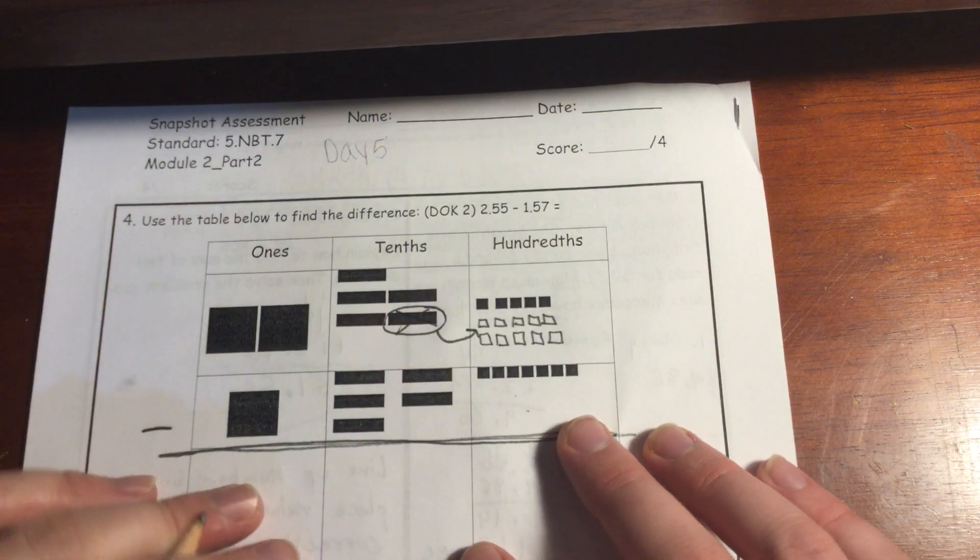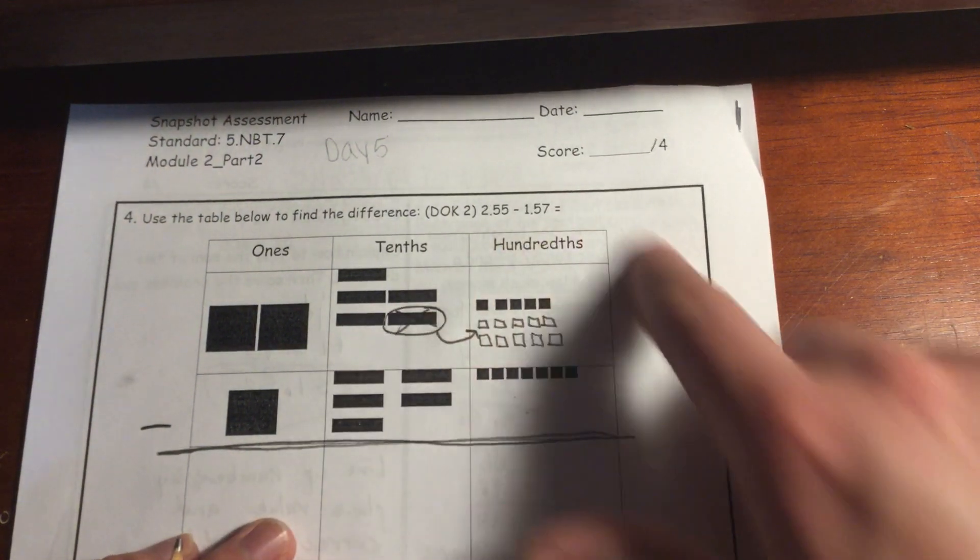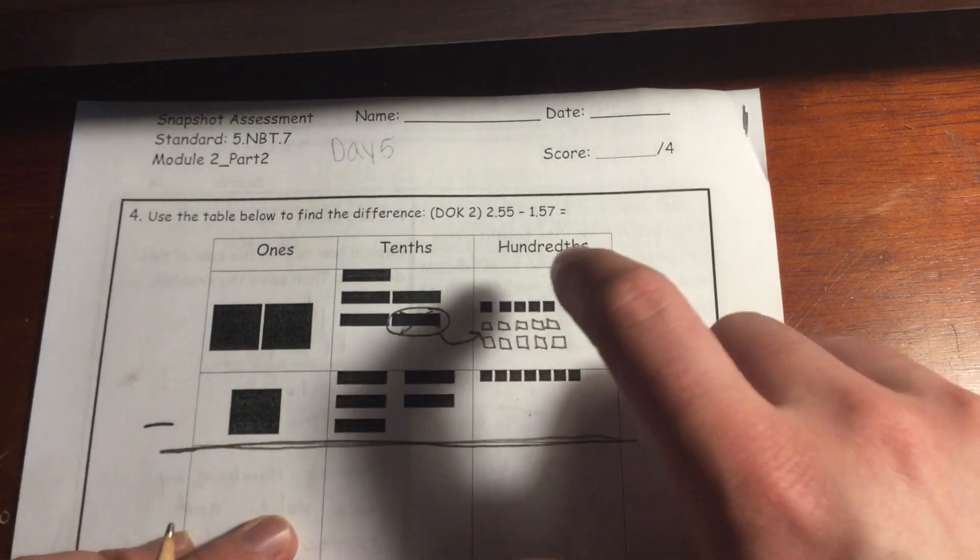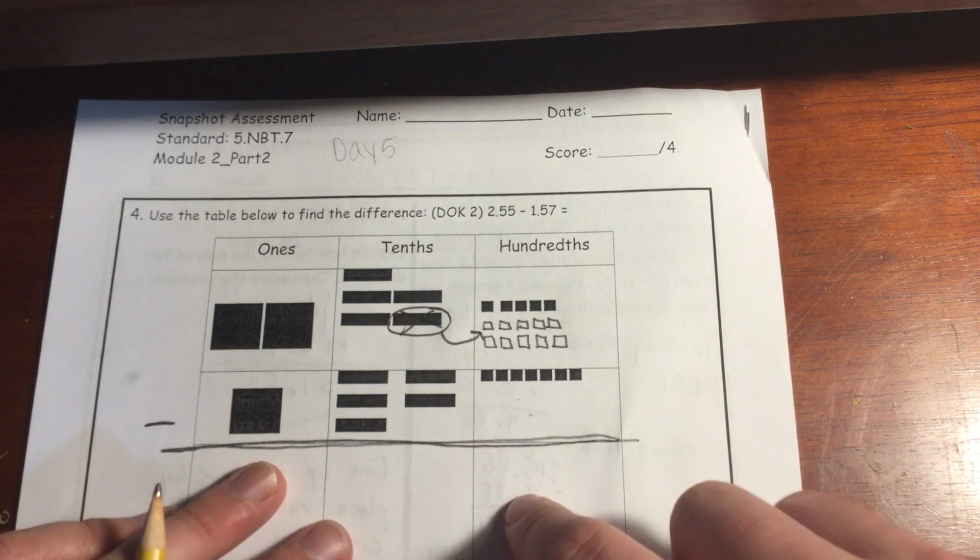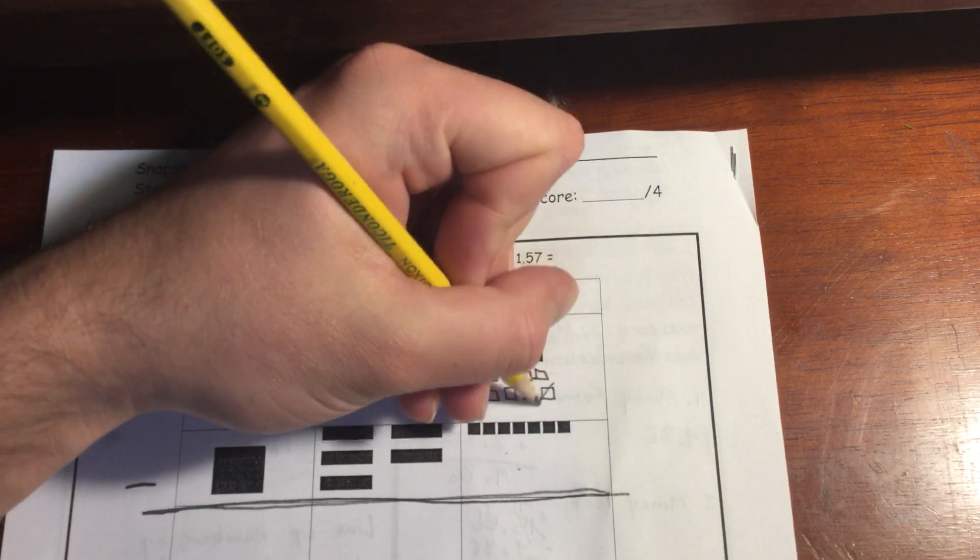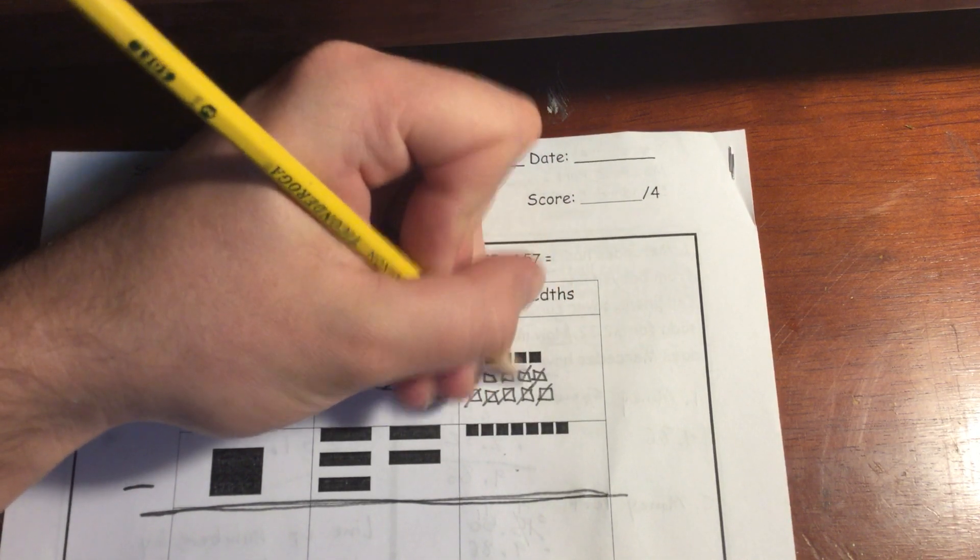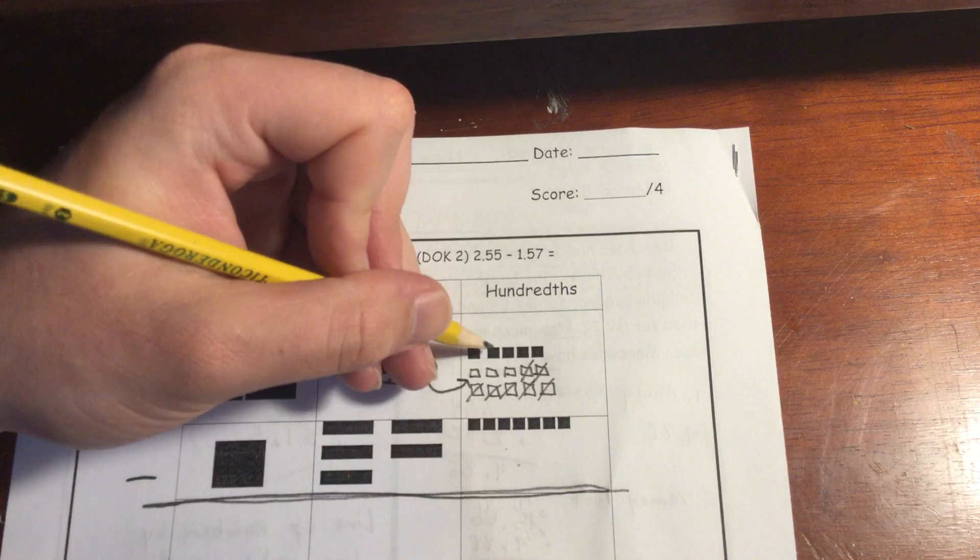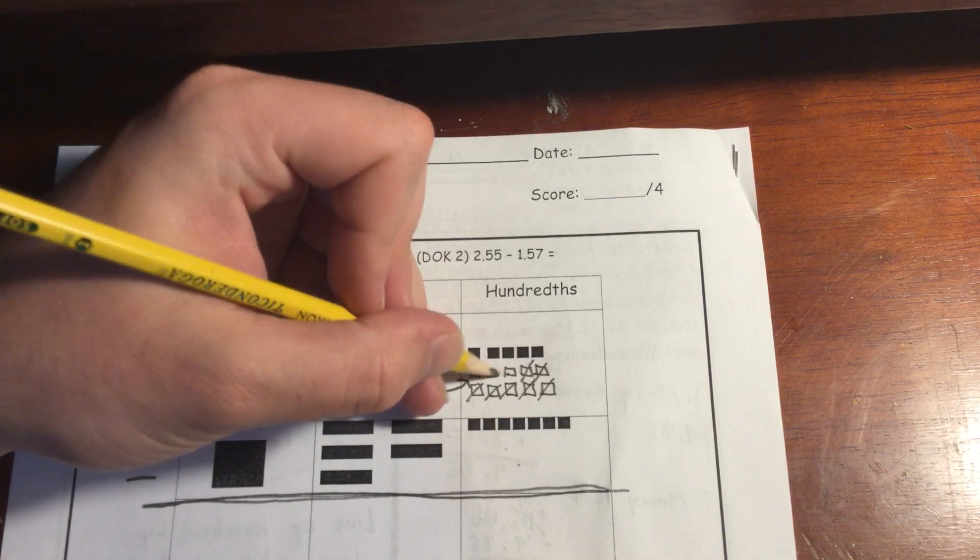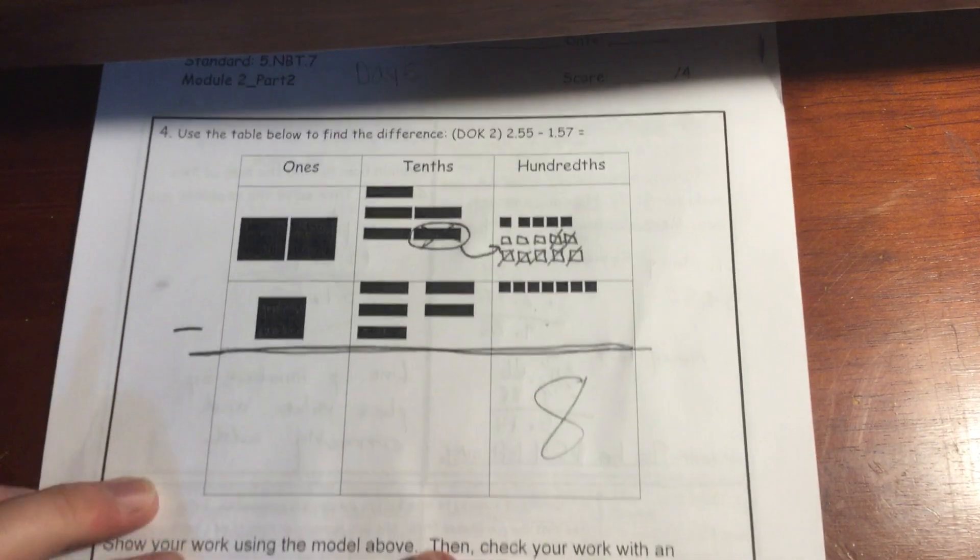And now simply what I'm going to do is since I'm taking away 7, I'm going to cross out 7 of these guys up here. And then the amount that's left over that's not crossed out is going to be my answer right here. So what I'm going to do is I'm going to cross out 7. One, two, three, four, five, six, seven. And then I see I have one, two, three, four, five, six, seven, eight left over. So that leftover amount, that difference is going to go down there.